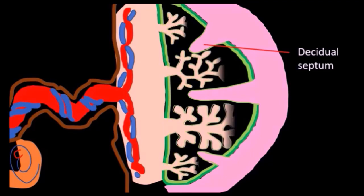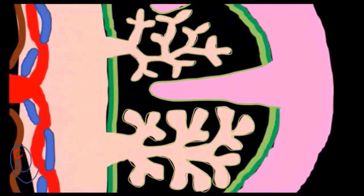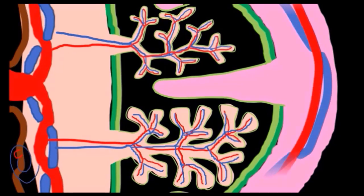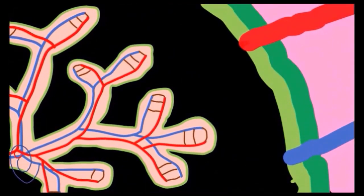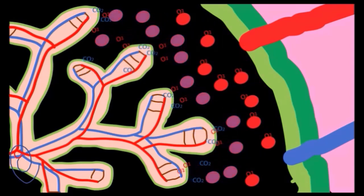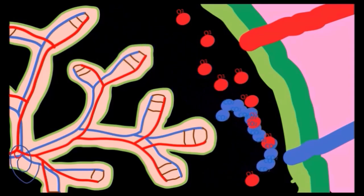On the fetal side, the chorion will grow inside the intervillous space forming the chorionic villi. Smaller branches of umbilical arteries and veins will grow inside the chorionic villi. Inside the decidua, maternal blood vessels will supply the intervillous space with arteries and veins. Decidual spiral arteries will supply the intervillous space with oxygenated blood. Gas exchange will happen at the terminal part of the villi, and deoxygenated blood inside fetal arteries will drain into veins. Now inside the intervillous space, the deoxygenated blood will be drained through decidual veins.